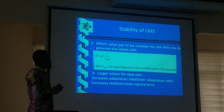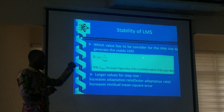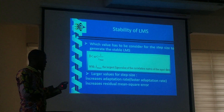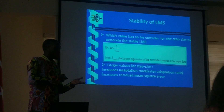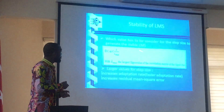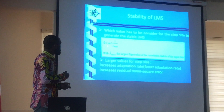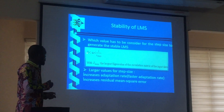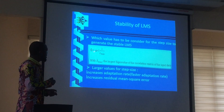Now, for stability: when descending the paraboloid, it is possible to overshoot and escape the bottom. For that reason, we must choose the step size properly. The step size must be chosen to be between zero and a specific upper bound to ensure convergence.